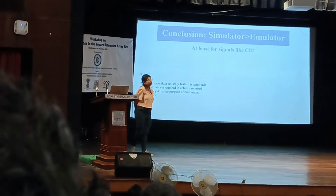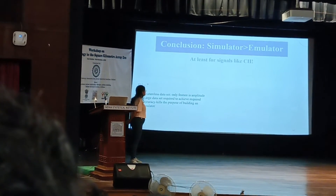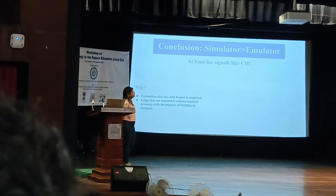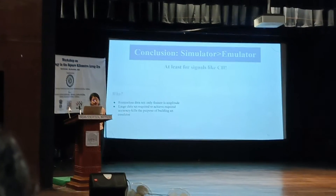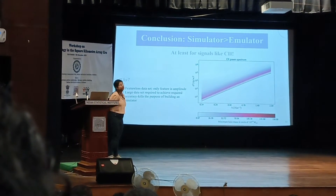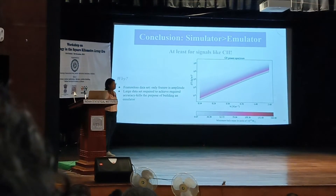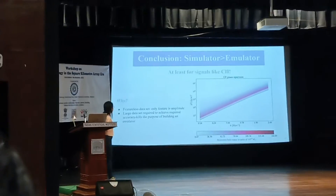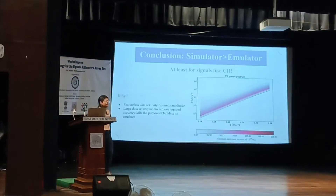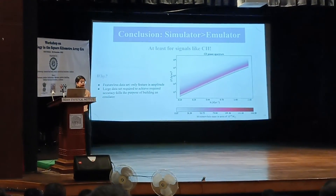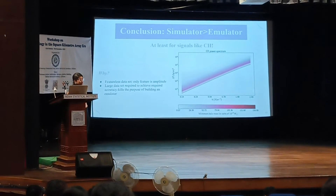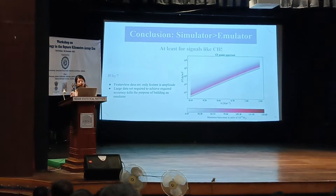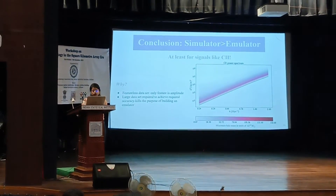From those experiments, what we could strangely conclude is that simulators seem to be a better option compared to emulators, at least for signals like CII. The reason is that the CII power spectrum is more or less featureless — the only thing that varies is the amplitude as you change the minimum halo mass. So the amount of data required to achieve reasonable accuracy essentially kills the purpose of building an emulator. It is much more efficient to use simulators for signals like CII.